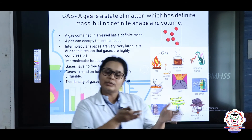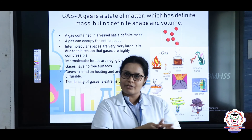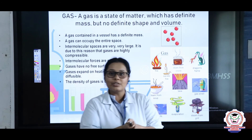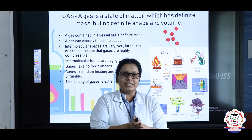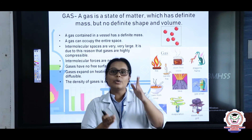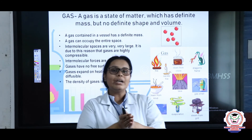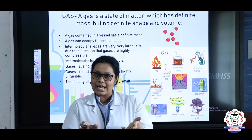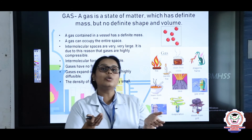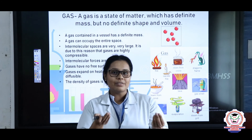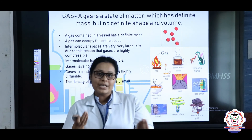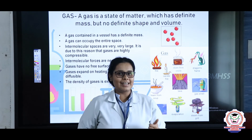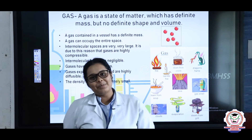The density of solids is always very high because they have a definite shape. The density of gases is very less because they don't have a definite shape or definite volume. These are the topics we have discussed. I hope students, you have understood what I have taught. You can go through the YouTube links or the study material attached, and later go to the self-assessment to check how much you have understood. I hope you have enjoyed the class. Thank you.